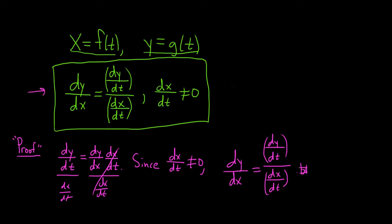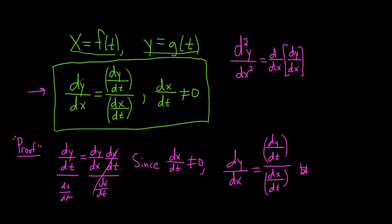What about the second derivative? The second derivative is d²y/dx², which equals d/dx of dy/dx — the derivative of the first derivative. We apply our formula again: think of dy/dx as your "y" here. So d/dt of that "y" is just d/dt of dy/dx.